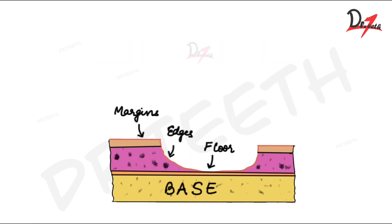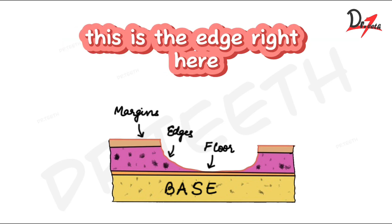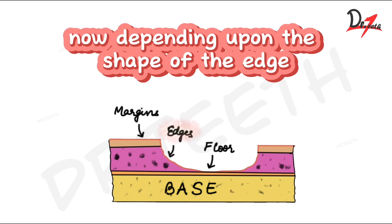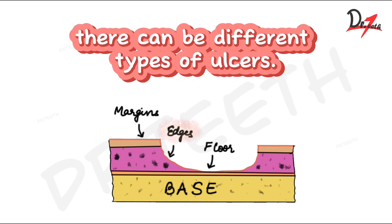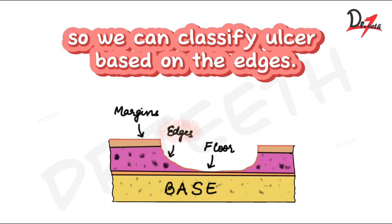All ulcers have margins, edges, floor, and a base, as you can see here. Now, depending upon the shape of the edge, they can be different types of ulcer — we can classify ulcers based on their edges.